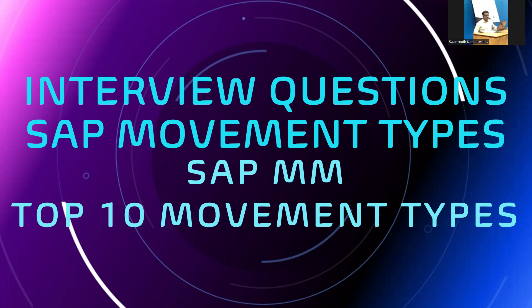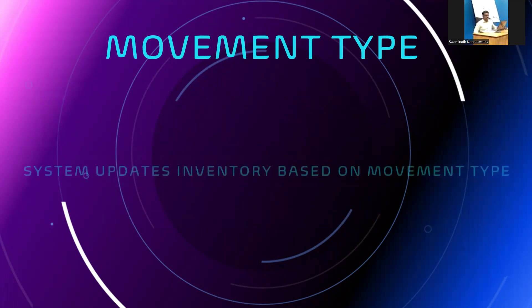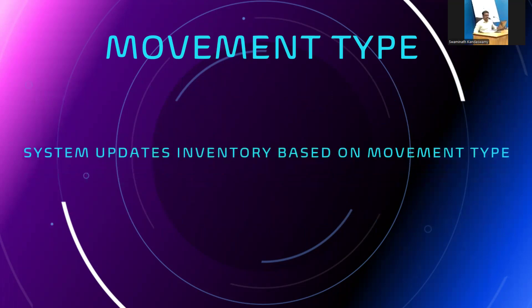First of all, what is a movement type? The system updates inventory based on the movement type. That is the definition of movement type.